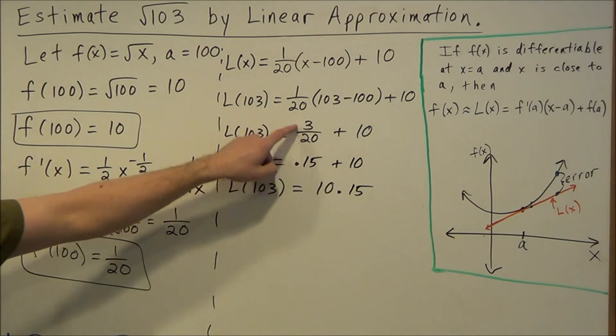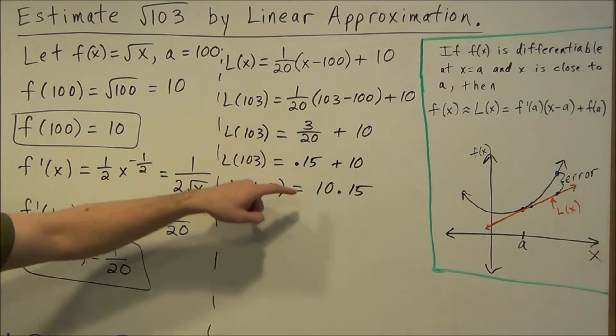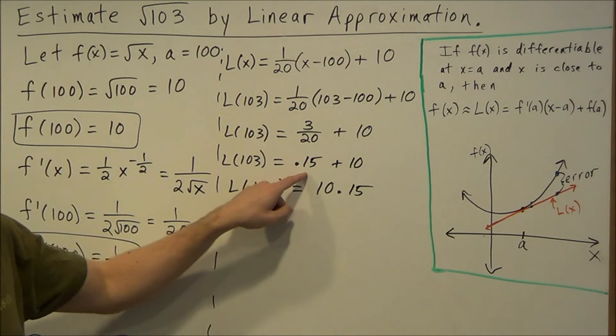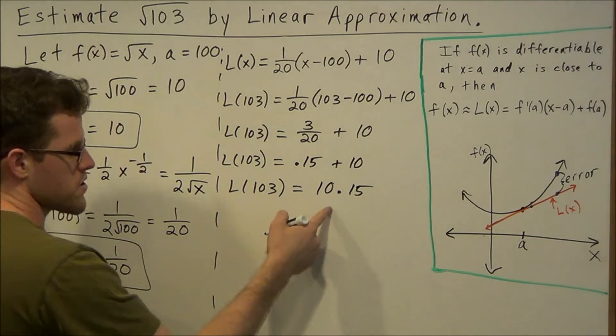Just know here you can multiply the top and bottom by 5 if you're doing this without a calculator, which gives you 15 over 100, which simplifies to 0.15. So we have this value here,